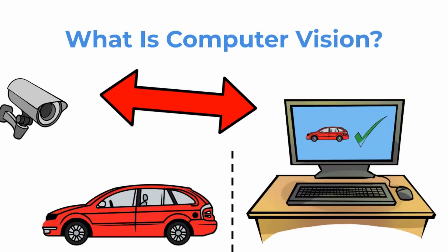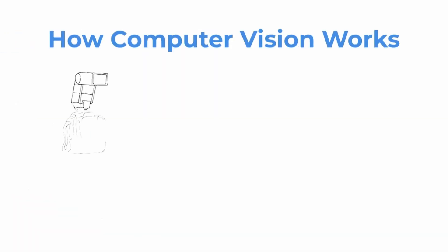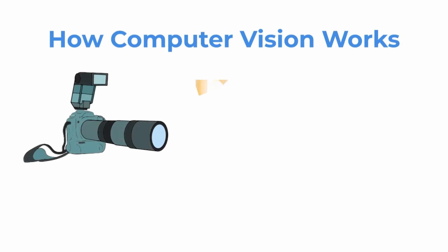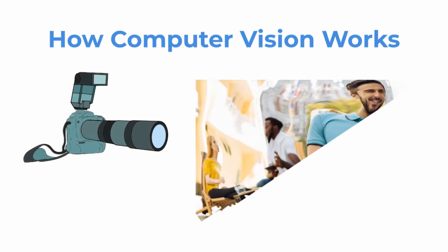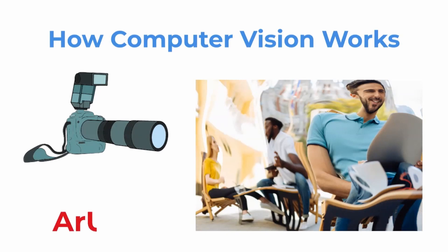However, we can do all operations in different languages. How computer vision works: to prepare images, in many cases we need to fix distortion. Distortion is deformation caused by the camera. To fix that, we can use a chessboard or ArUco markers. Both are used to help the camera know the real geometry. After fixing that, we can make further manipulations.